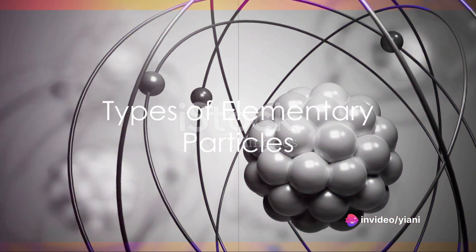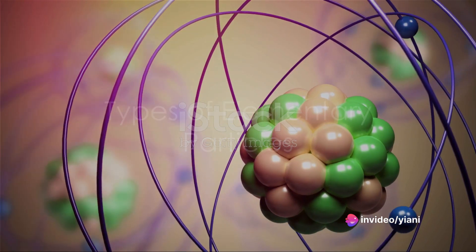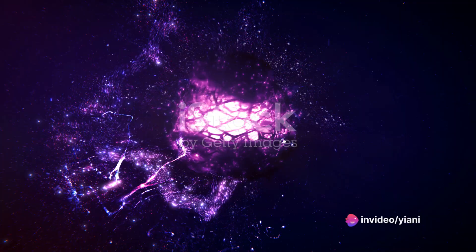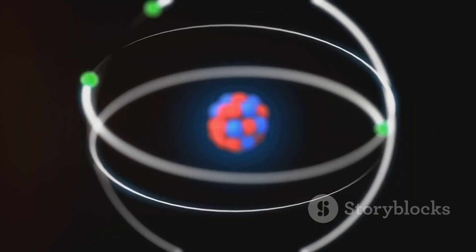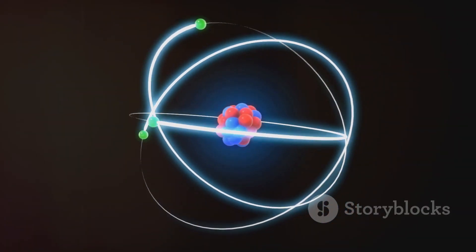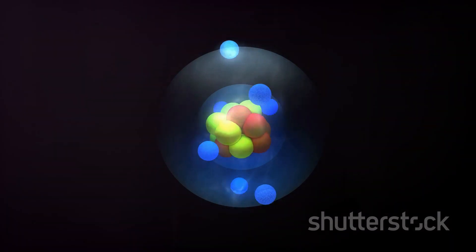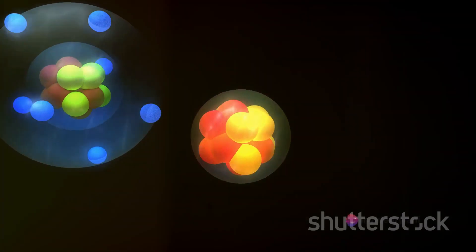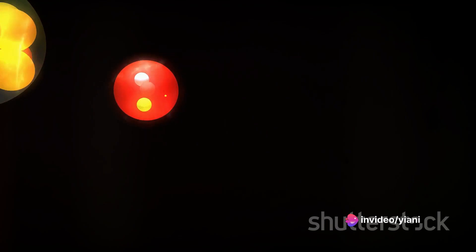Within the universe, there are two types of elementary particles: fermions and bosons. Fermions are the building blocks of matter, including electrons, quarks, and neutrinos. Bosons, on the other hand, are the mediators, the particles responsible for interactions between fermions.